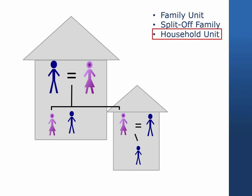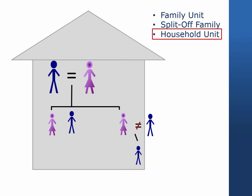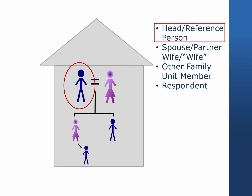As an example, two family units in a household unit can occur if an adult child and grandchild who split off from a PSID family to form their own family unit were to return to their original family household.